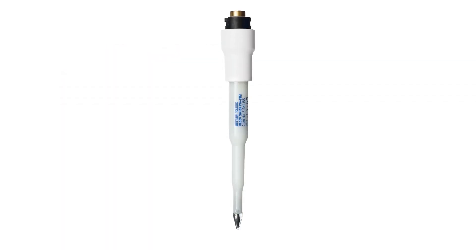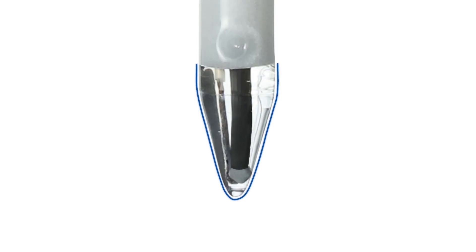This electrode has a spear-shaped tip made of thick, toughened glass that allows direct insertion into the food samples. This spear-shaped pH-sensitive membrane is made of LOT glass, which has a low resistance, which helps in fast results.